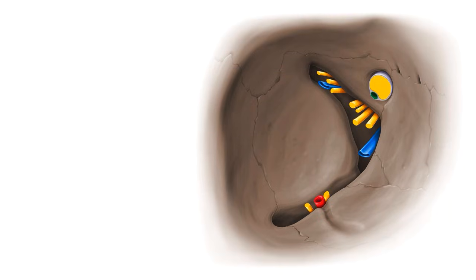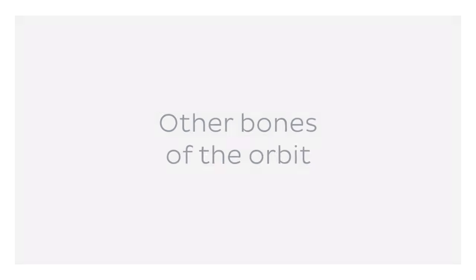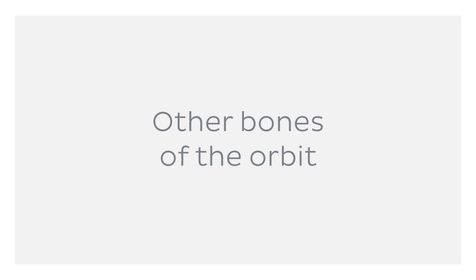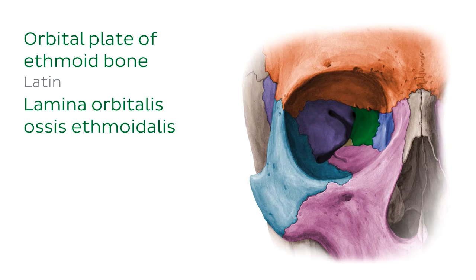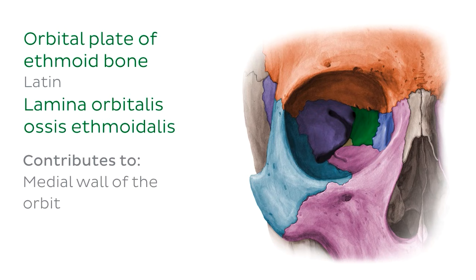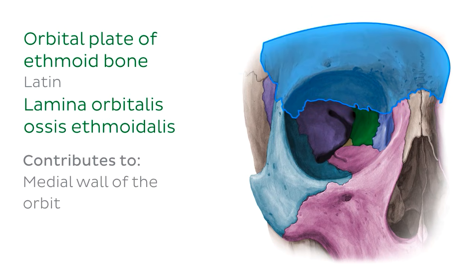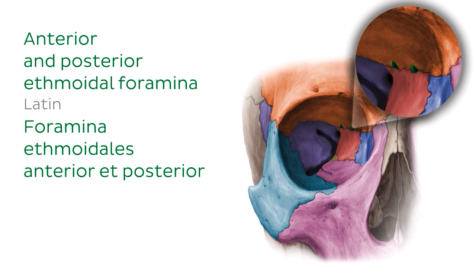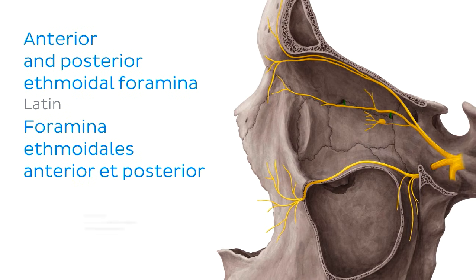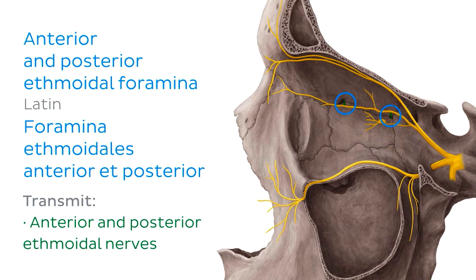We've spoken about the major contributing bones to the walls of the orbital cavity. Let's quickly look at some of the smaller bones which fill in the gaps of the orbit. The first is the ethmoid bone — specifically the orbital plate of the ethmoid bone. The ethmoid bone is located centrally within the cranium and, like the sphenoid bone, contributes to the medial wall of both the right and left orbits. It is bordered superiorly by the frontal bone, and this is where you'll find two small foramina piercing the orbital wall: the anterior and posterior ethmoidal foramina, which transmit the anterior and posterior ethmoidal nerves.